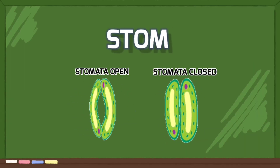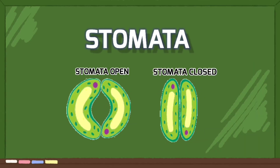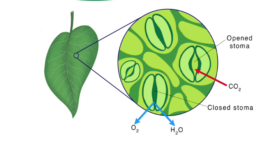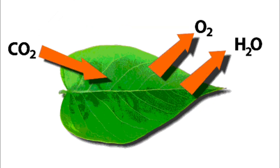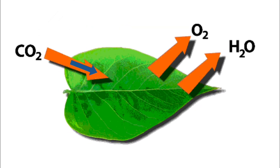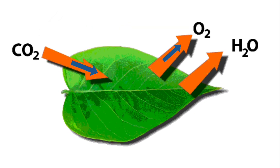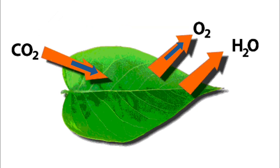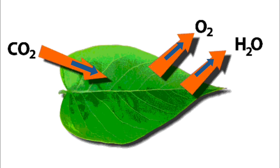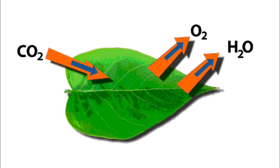Now let's talk about stomata. These are tiny pores on the surface of leaves that allow gas exchange. Stomata let in carbon dioxide and release oxygen, and they also help regulate water loss through transpiration.